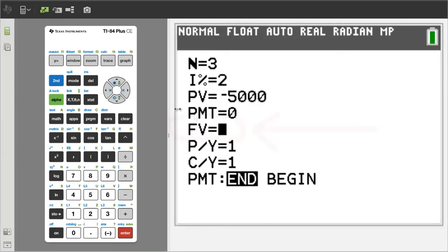Move the cursor to FV, Future Value, because that is the variable that we are trying to solve. To solve, press the green alpha button here, then the enter button here.